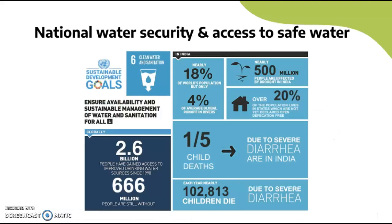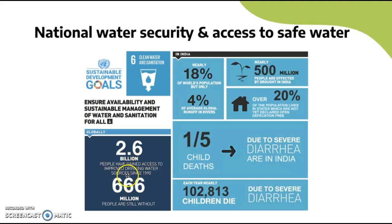Now looking at national water security and access to safe water, linking to the UN SDGs — specifically Goal 6: Clean Water and Sanitation — to ensure availability and sustainable management of water and sanitation for all. Globally, 2.6 billion people have gained access to improved drinking water sources since 1990, but 666 million people are still without.